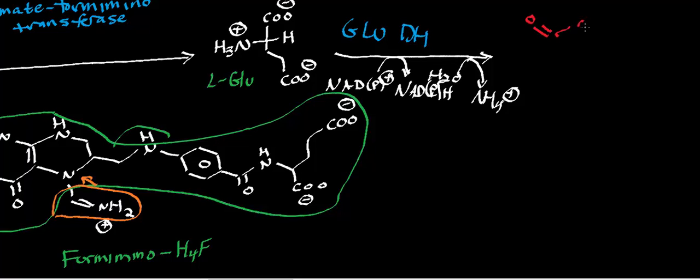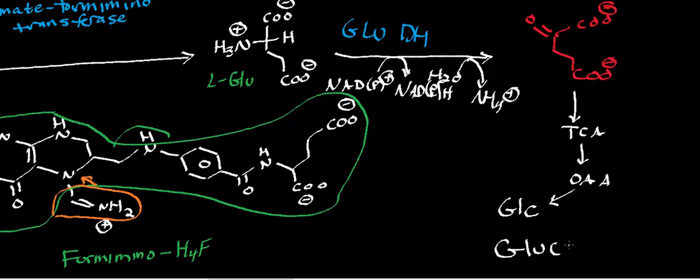Our final product of histidine catabolism is going to be alpha-ketoglutarate. The alpha-ketoglutarate is going to get shunted into the TCA cycle, where it will ultimately form oxaloacetate, and then that will get shunted into gluconeogenesis. We can ultimately say the alpha-ketoglutarate will get shunted into the TCA cycle, where it will form oxaloacetate, and then that will get shunted into gluconeogenesis to form glucose.